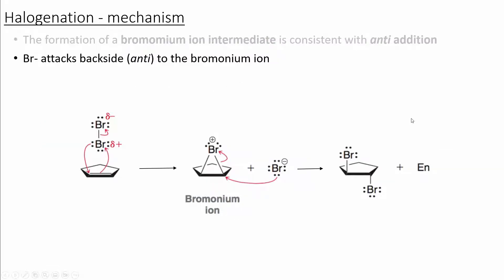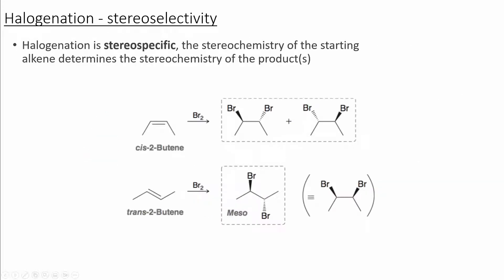After the bromonium ion is formed, the bromine leaving group will act as a nucleophile and attack the opposite face. This will result in the anti-attack of the bromonium ion and the trans product. Halogenation is a stereospecific reaction, due to the molecule being locked in conformation when the bromonium ion is formed.